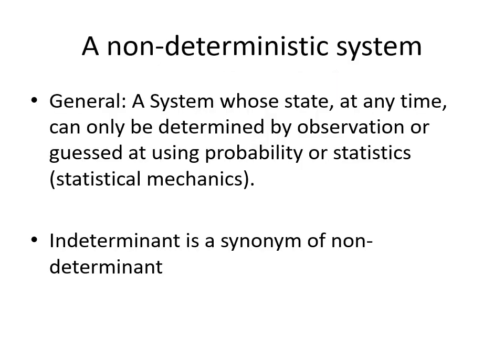So an indeterminate system, or a non-deterministic system, is a system whose state at any time can only be determined by observing it, or by using probability and statistics to try to guess what the state of the system is. That's what we call statistical mechanics, which is pretty much mostly what quantum mechanics is. The word indeterminate is a synonym of non-deterministic.